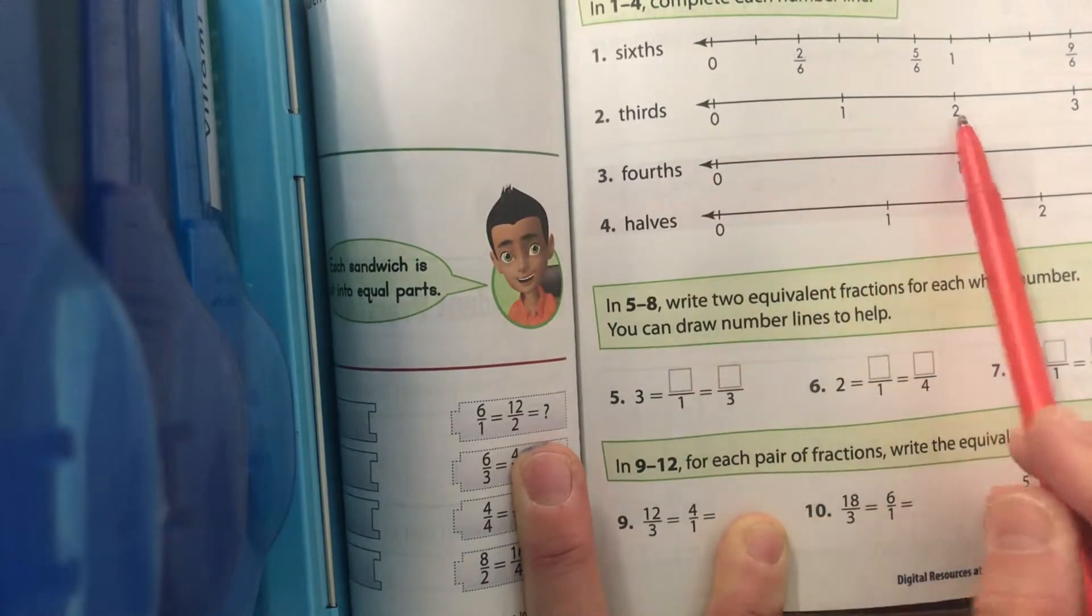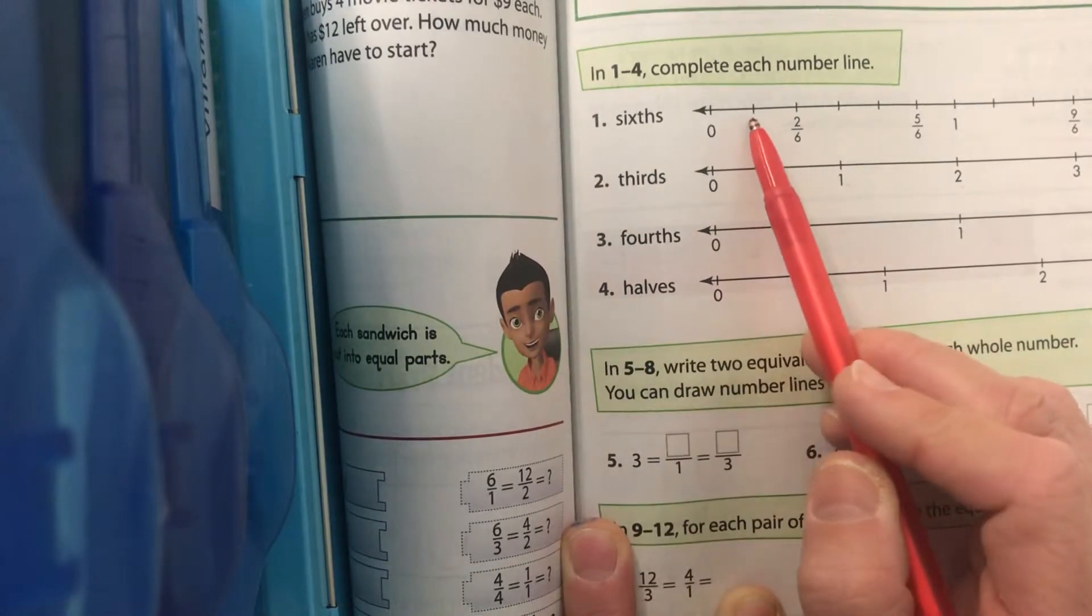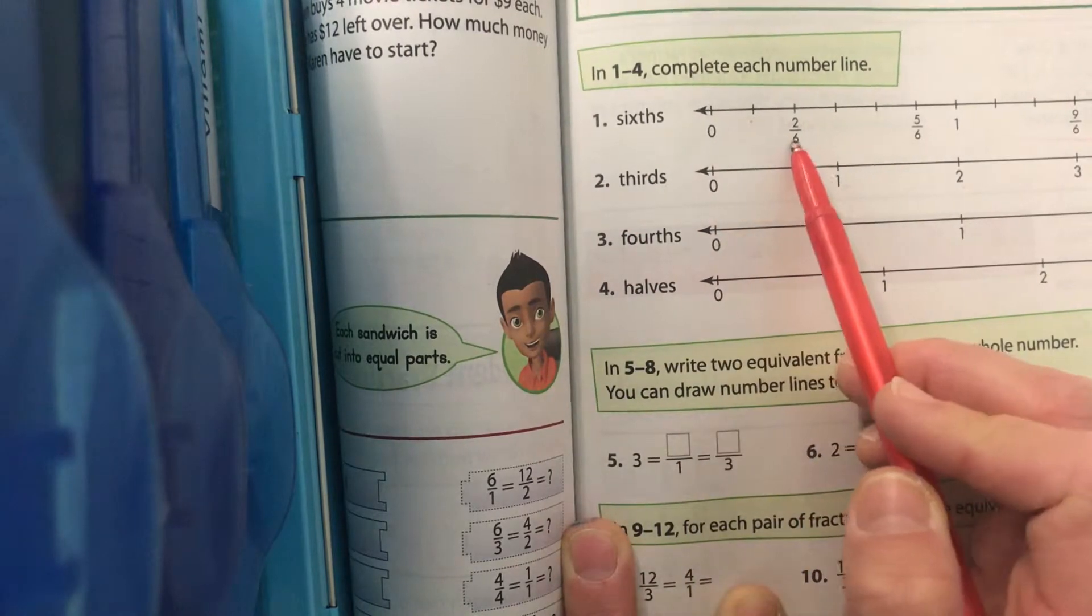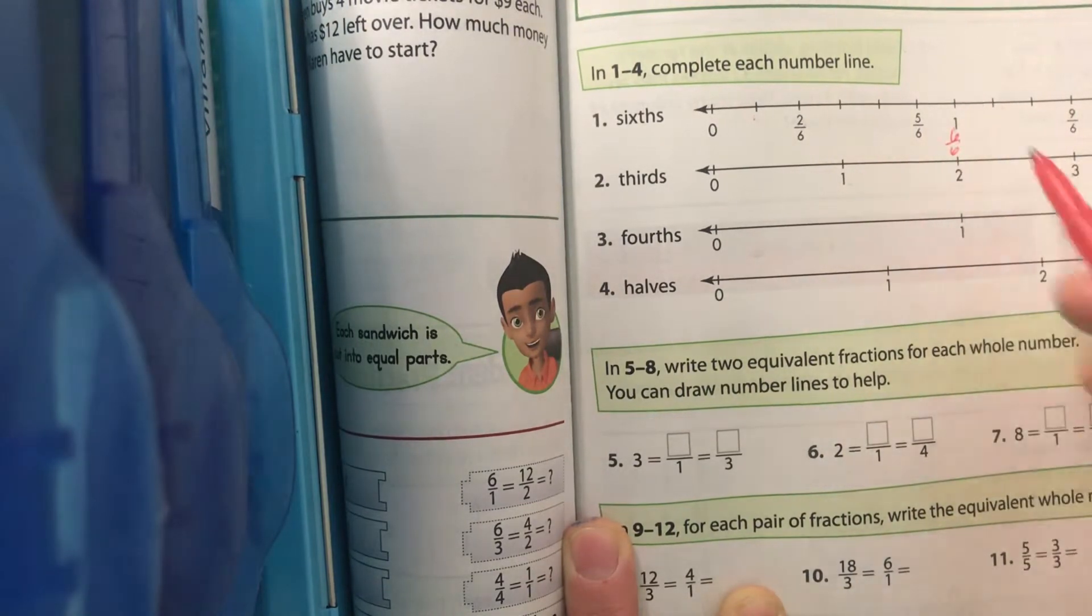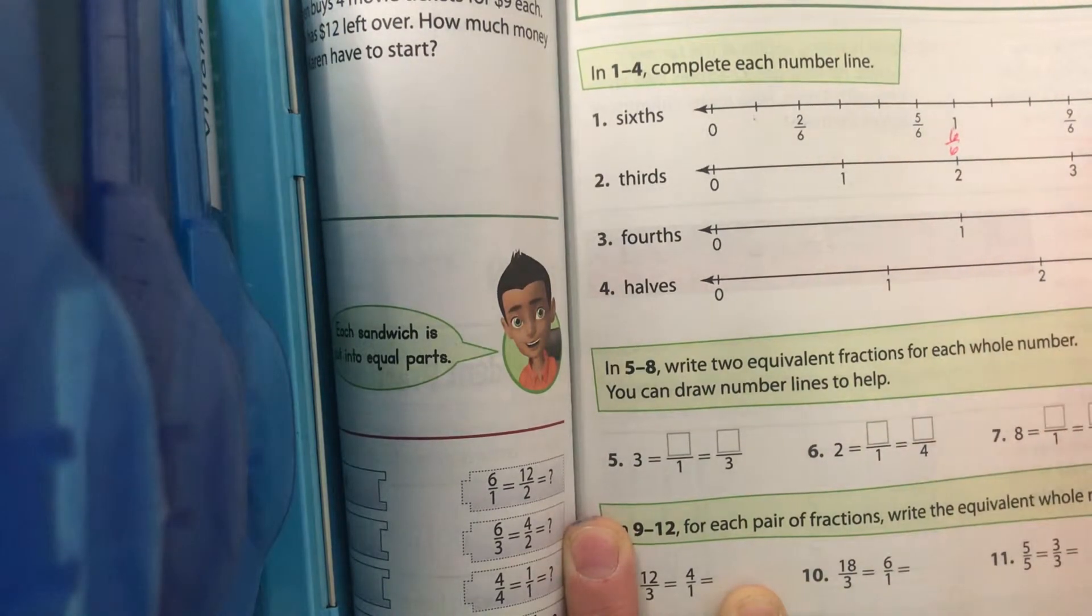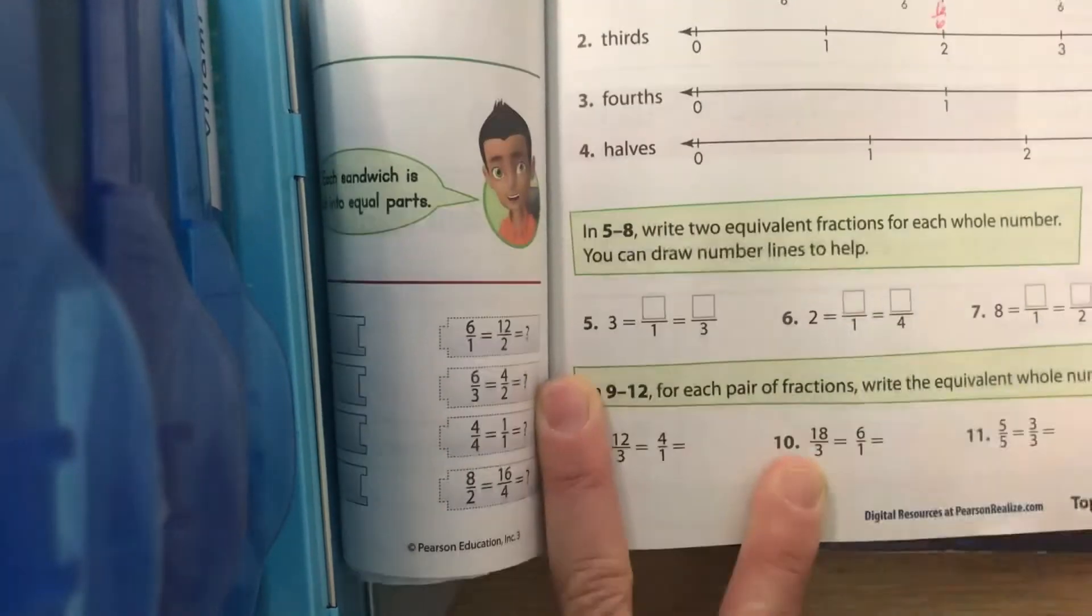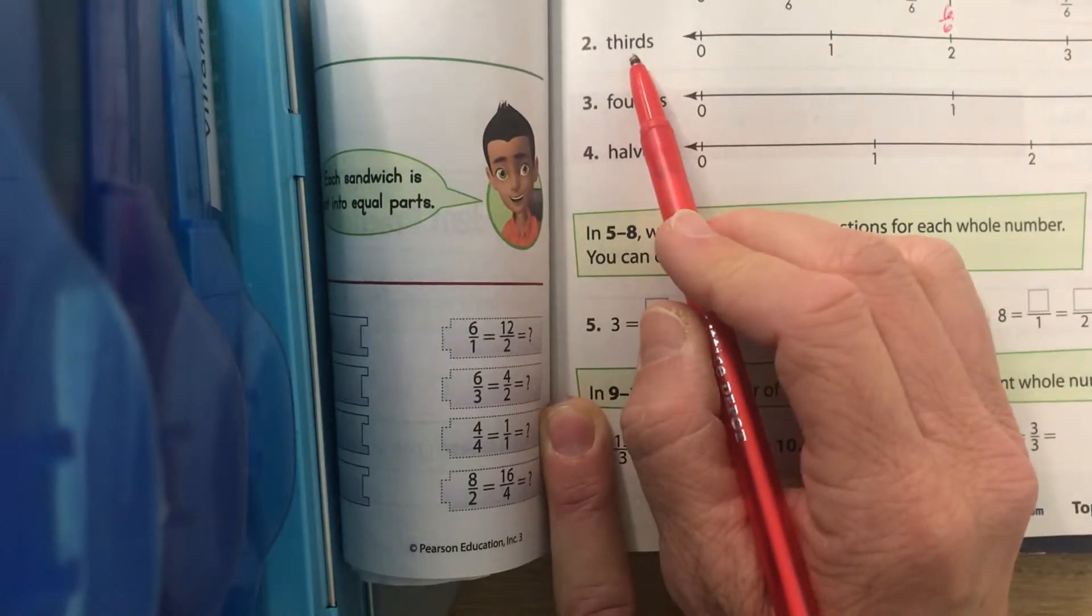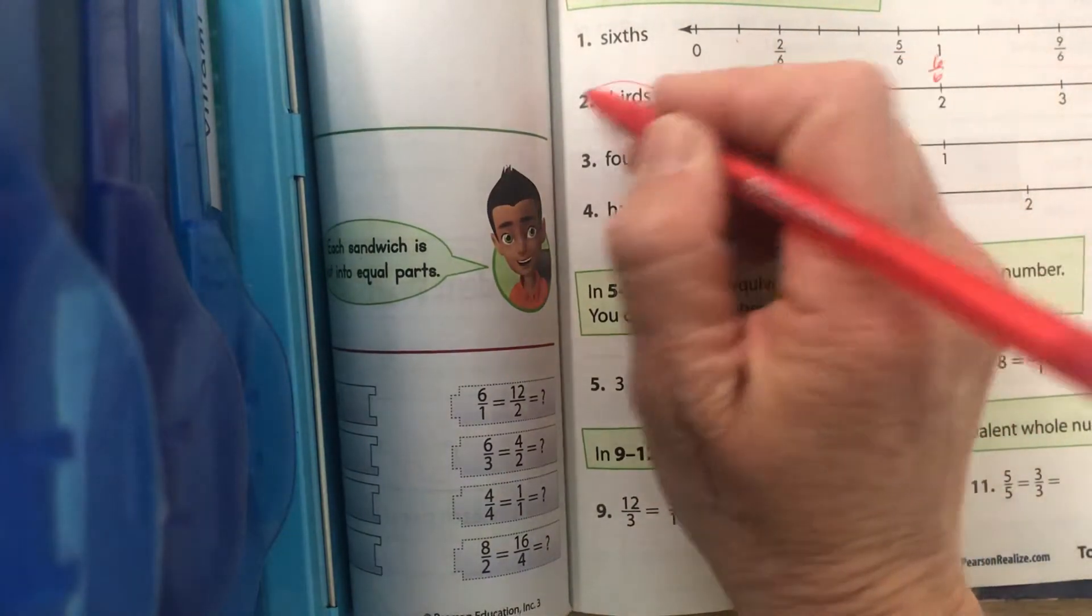They have broken this one up. [Counting sixths] 1/6, 2/6, 3/6, 4/6, 5/6. Don't forget to write 6/6 for that one. 7/6, 8/6, 9/6, 10/6, 11/6, 12/6. Does it make sense that whole number 2 is 12/6? What's 12 divided by 6? 2.